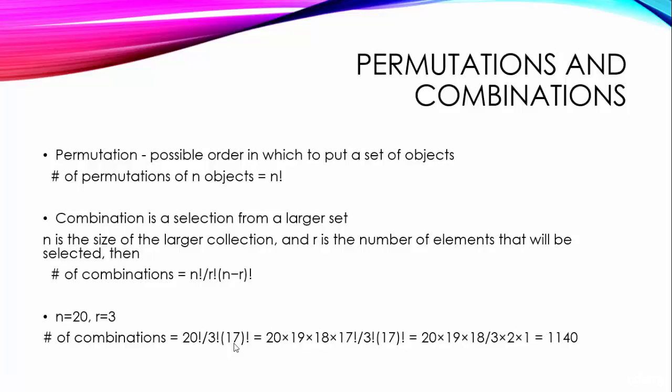To simplify this, consider that 20 factorial will be equal to 20 into 19 into 18 into 17 into product of all the numbers less than 17, which is written as 17 factorial. The neat little trick allows us to enormously simplify the combinations formula.